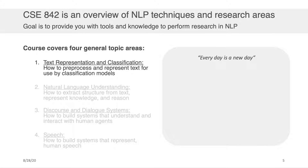CSE 842 is an overview of NLP techniques and research areas. The goal is to provide you as a graduate student with the tools and knowledge needed to perform your own research in natural language processing. This course will cover four general topic areas.